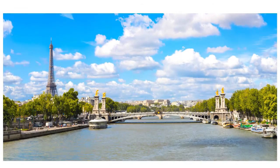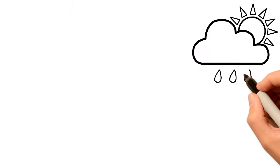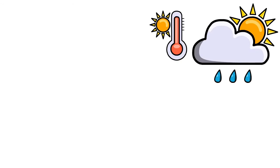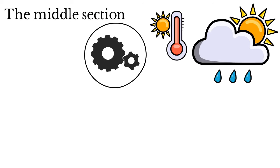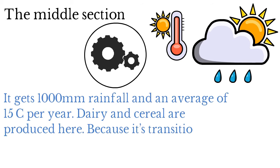Drainage in Paris Basin includes the River Seine and River Loire. There are three different climates in the Paris Basin. The middle section has a transitional climate. It gets 1,000 millimeters rainfall and an average of 15 Celsius per year. Dairy and cereal are produced here. Because it's transitional, it's a mix of both cool temperature oceanic and continental, making it able to grow any crop.